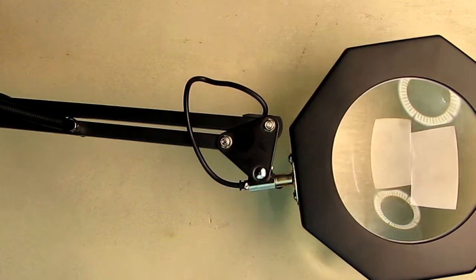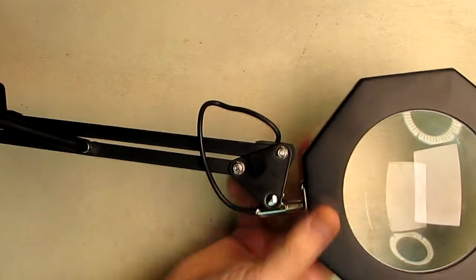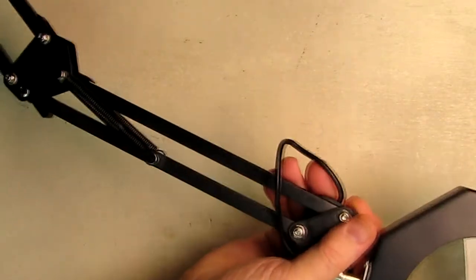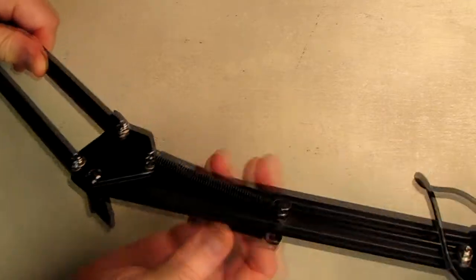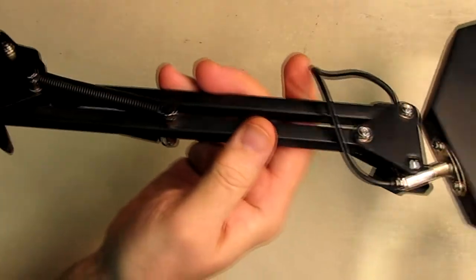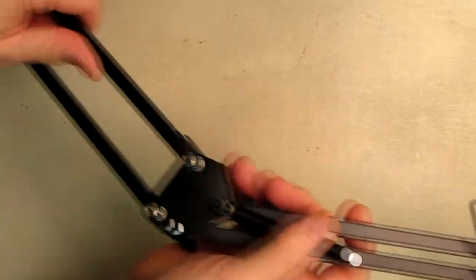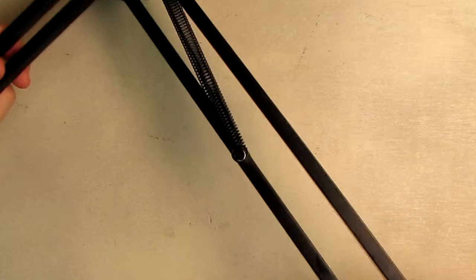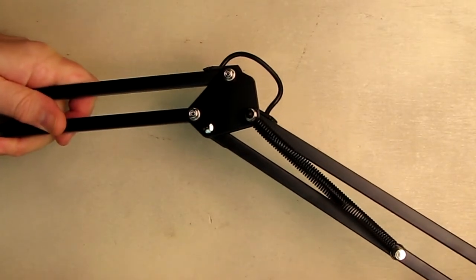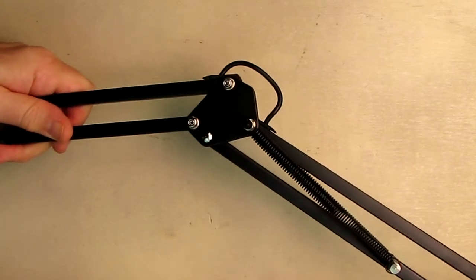Now what keeps this thing in place are these joints right here which allow movement just like that. And then there's tension springs you can see. And those provide the right tension to offset the weight of the LEDs and the glass lens. And this is what allows it to be totally adjustable. And this is a really long light that allows a large amount of range and control which is really nice.